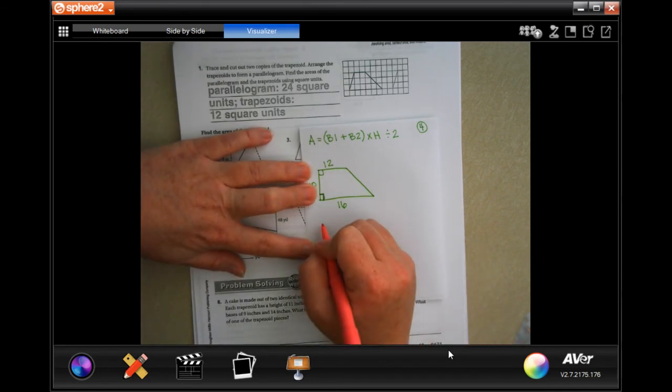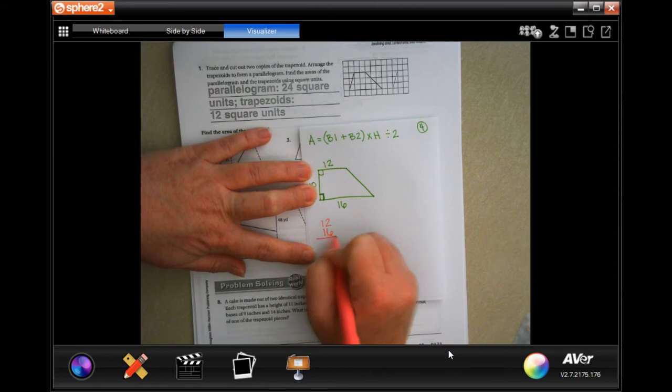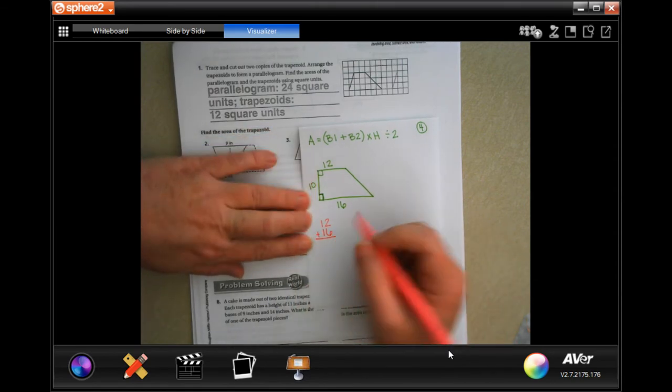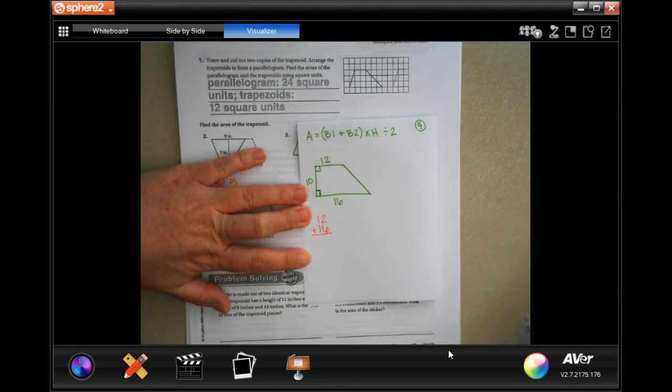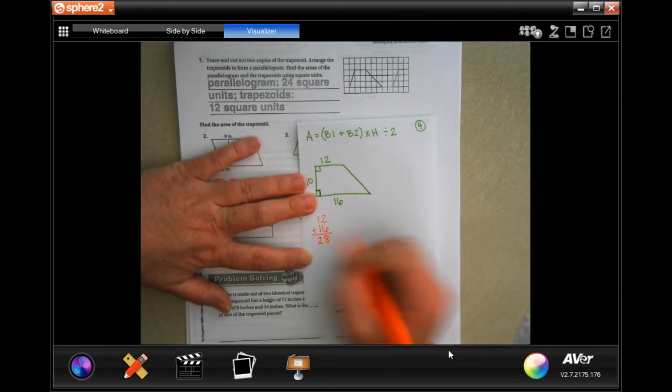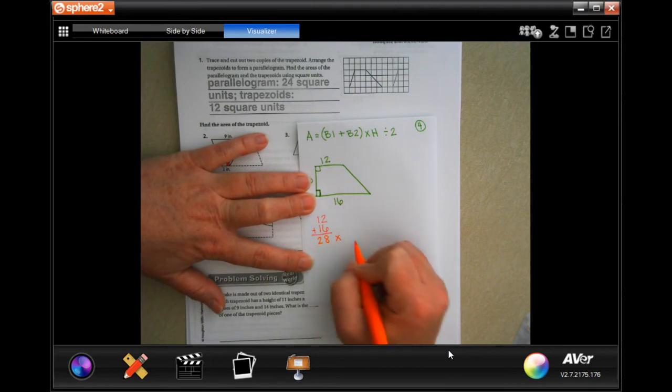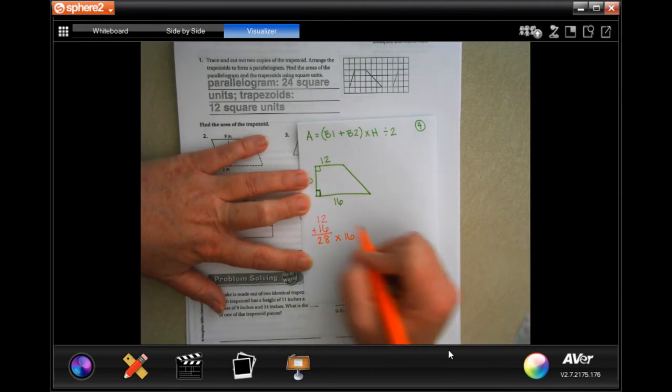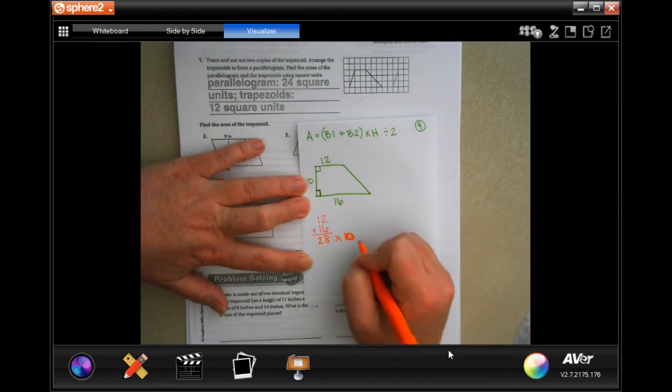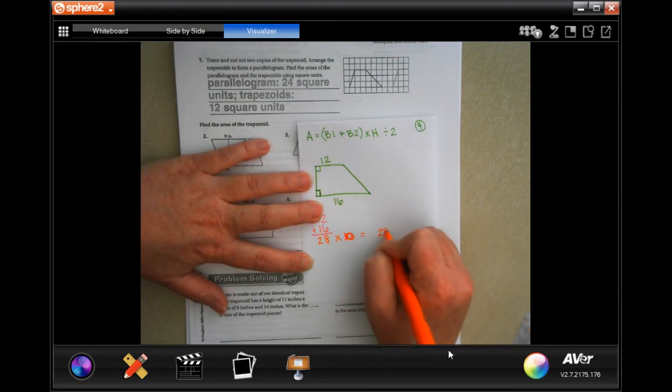So base 1 is 12, base 2 is 16. It doesn't matter which order you put those in. So I'm going to add those up. 2 plus 6 is 8, 1 plus 1 is 2, so 28. I'm going to multiply that 28 by 10, the height is 10, which will give me 280.